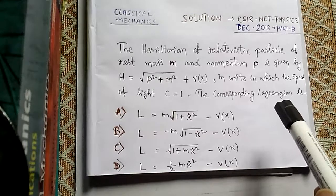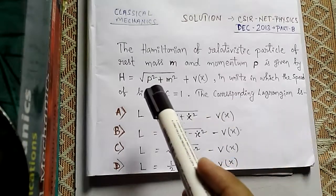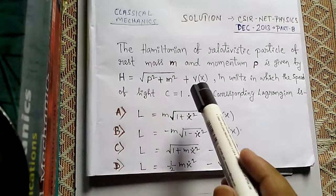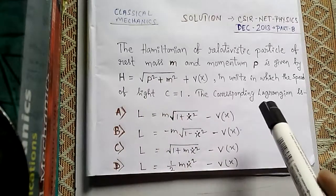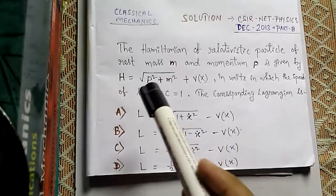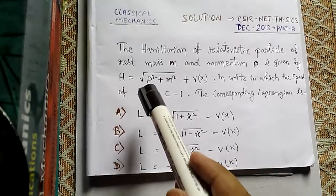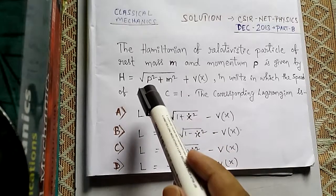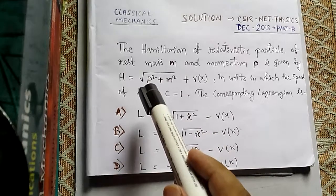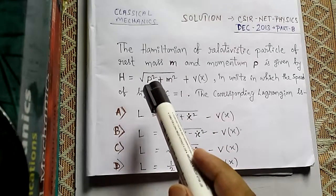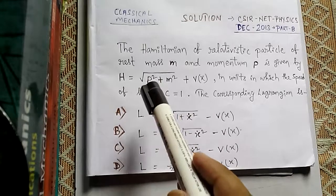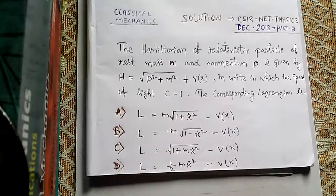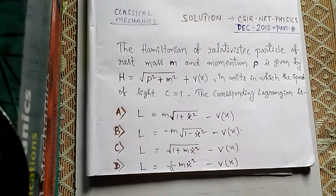The corresponding Lagrangian is what we need to find. Notice the Hamiltonian has been provided and the Lagrangian has been asked. This is a one-dimensional Hamiltonian — I say that because I see P here but no terms like P₁ or P₂. So to find the Lagrangian we go to the Hamiltonian formulation in one dimension.